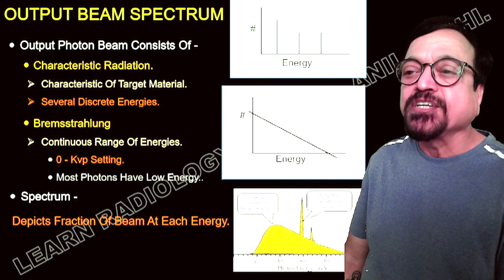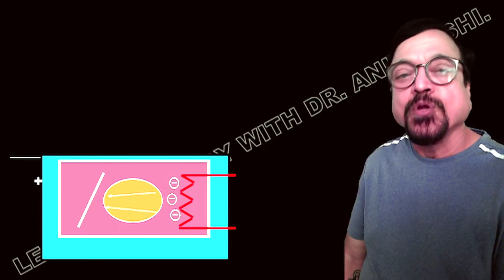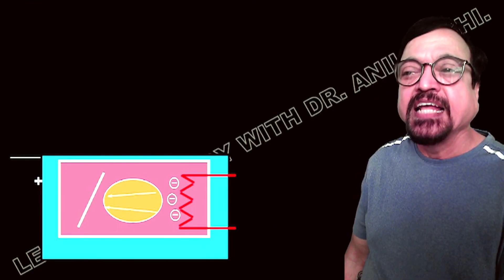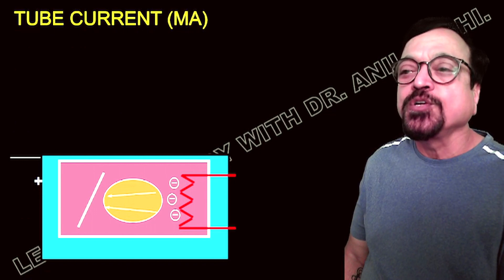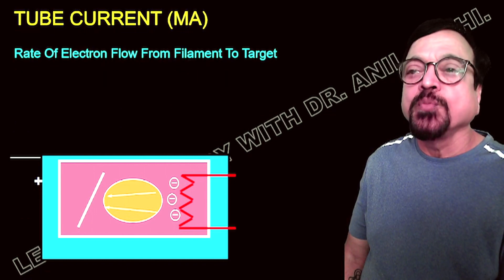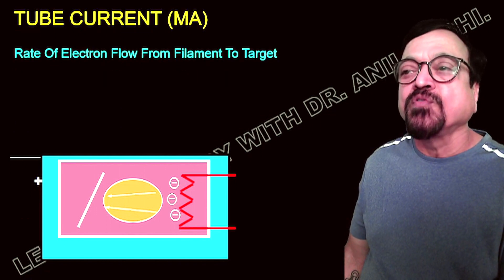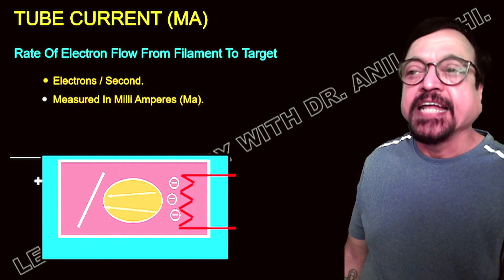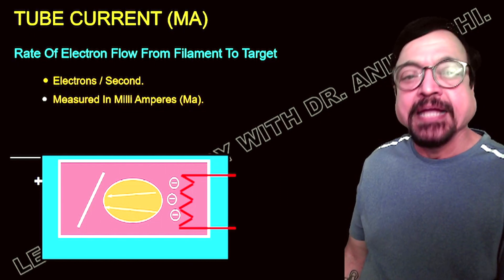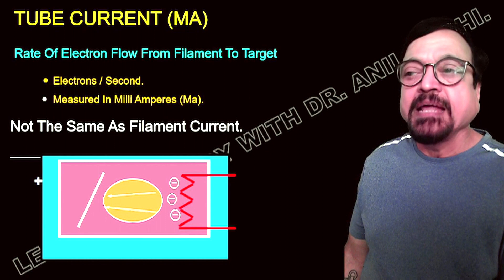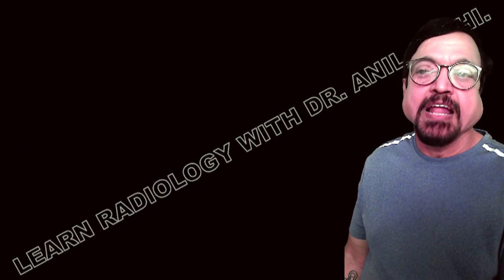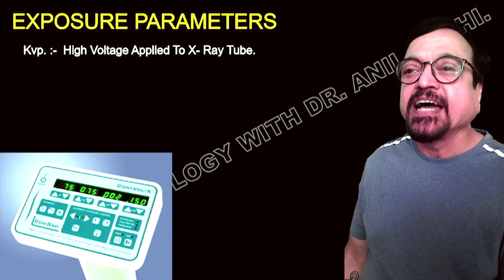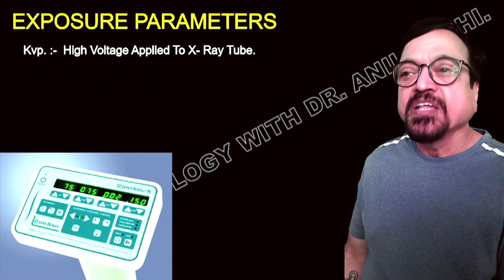Each energy fraction of the beam produces x-rays, and what it produces is extremely important to make use of. Tube current is the rate of electron flow from filament to target, measured in milliamperes (mA). It is not the same as the filament current — it is different.